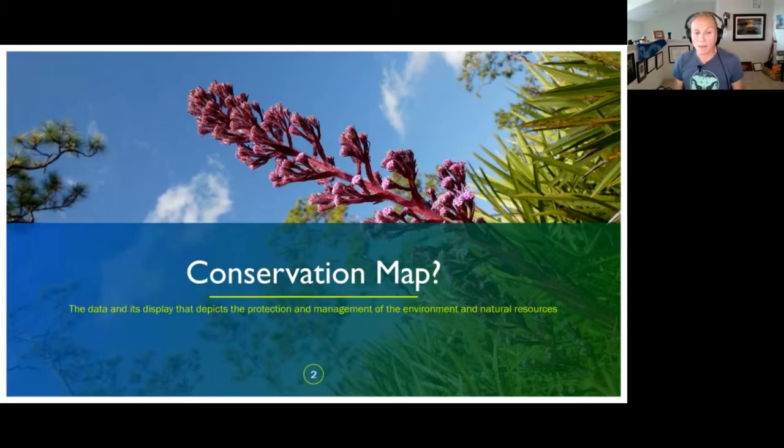So for the conservation map, the conservation map to me is the data and its display that depicts the protection and management of the environment and natural resources. And conservation is the moral philosophy and movement focused on protecting species from extinction, maintaining and restoring habitat and enhancing ecosystem services and protecting biological diversity.